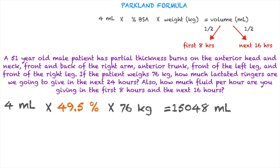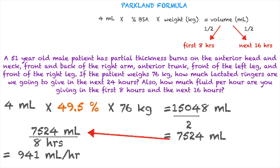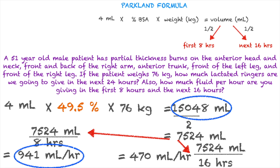15,048 mL is the total IV fluid for the first 24 hours. Dividing by 2 gives us 7,524 mL for the first 8 hours and 7,524 mL for the next 16 hours. For the first 8 hours: 7,524 divided by 8 equals 941 mL per hour. For the next 16 hours: 7,524 divided by 16 equals 470 mL per hour. Total 24-hour volume: 15,048 mL. First 8 hours at 941 mL/hr, next 16 hours at 470 mL/hr. And that is the Parkland formula.